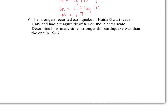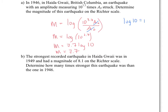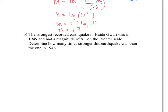The strongest recorded earthquake in Haida Gwaii was in 1949 and had a magnitude of 8.1 on the Richter scale. We'd like to know how much stronger this earthquake is compared to the one in 1946. To do this, we need to calculate the amplitude of both and find the ratio — because we're not simply comparing 8.1 and 7.7, we're comparing their amplitudes. The amplitude of the 8.1 earthquake would be 10 to the power of 8.1, and the amplitude of the 7.7 would be 10 to the power of 7.7. Dividing these gives the ratio of how much stronger the 8.1 earthquake is.